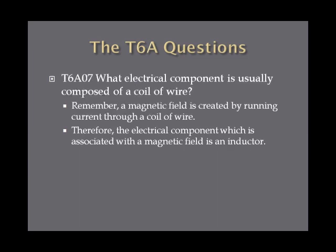What electrical component is usually composed of a coil of wire? This is a review from the last question. A magnetic field is created by running current through a coil of wire, therefore the electrical component associated with a magnetic field is an inductor.